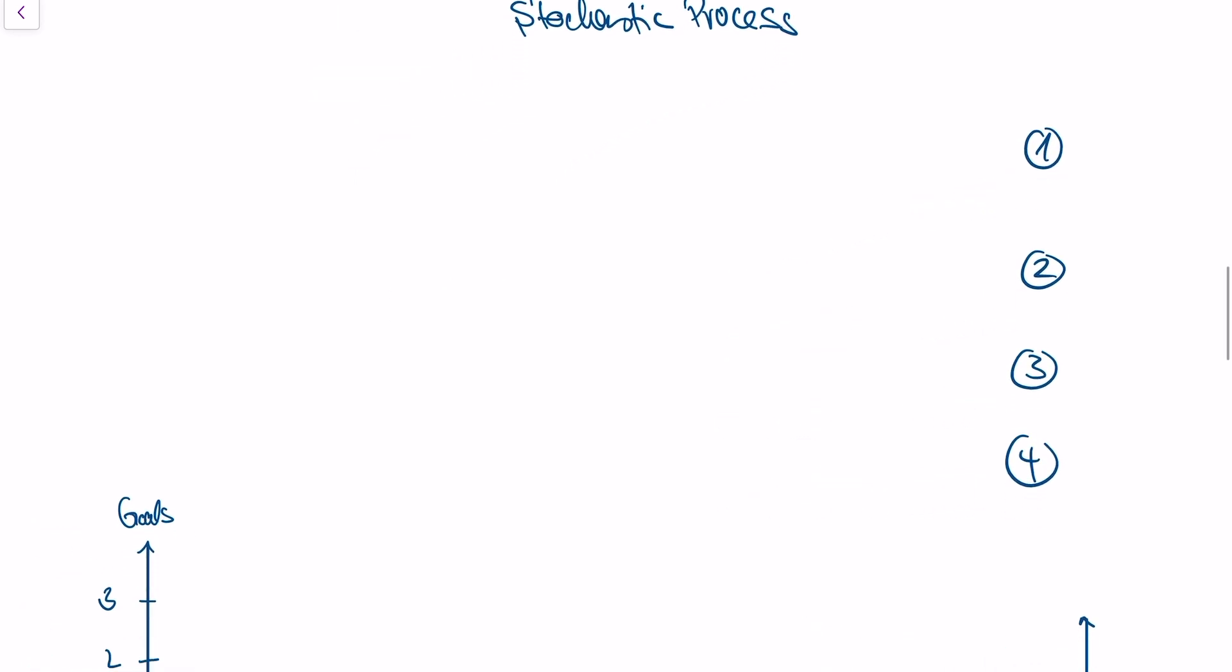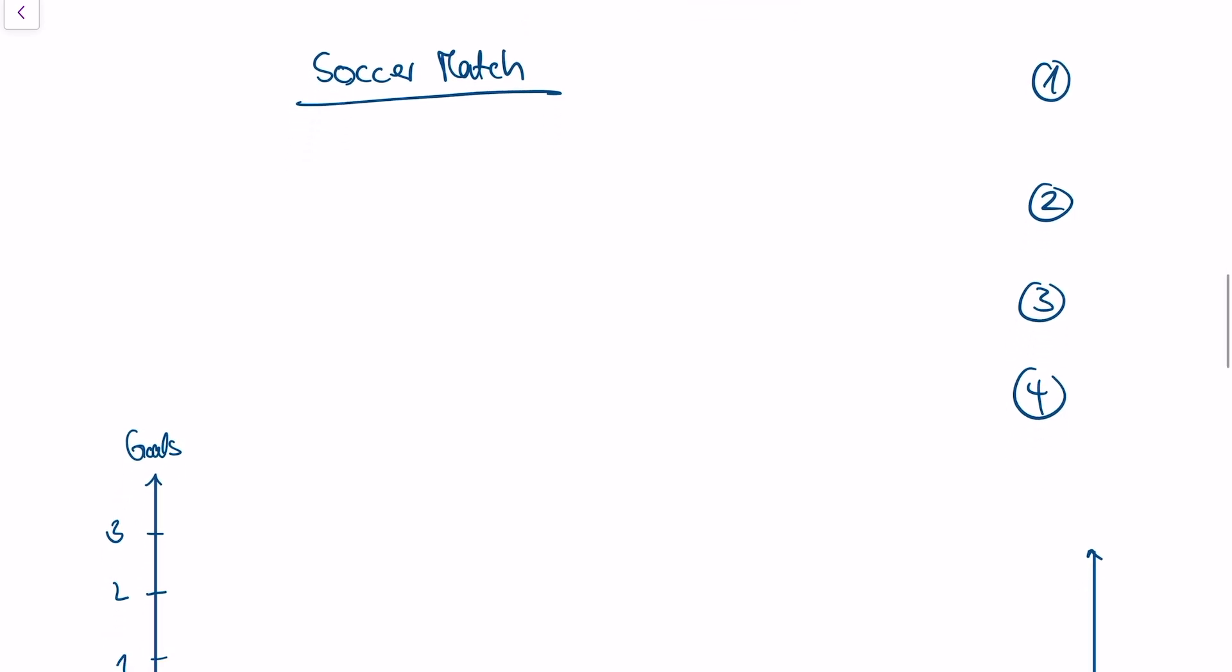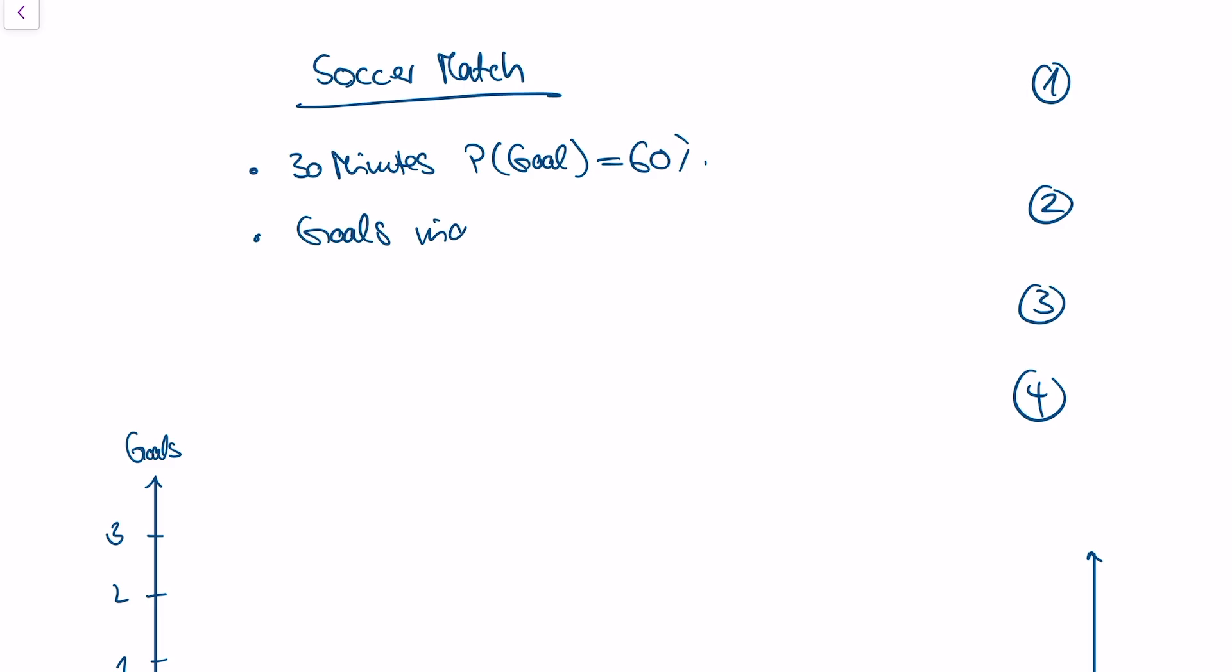Let's start with a simple example. Suppose we're interested in modeling the goals in a soccer match. Here's a simple model for that. Let's say every 30 minutes, the probability of a goal is 60%, and those goals are independent of each other.